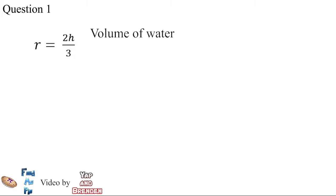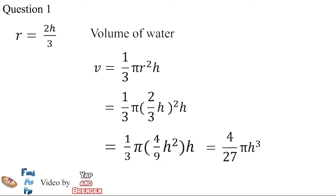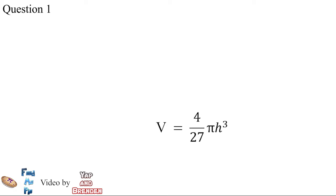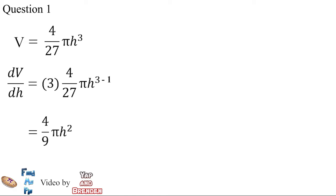The volume of a cone is 1/3 π r² H. Substituting R equals 2/3 H into the equation, we get V equals 4/27 π H³. Differentiating V with respect to H, we get dV/dH equals 4/9 π H².